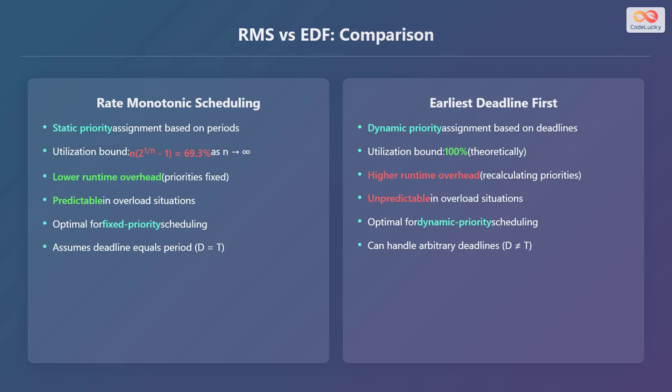Let's compare Rate Monotonic Scheduling, or RMS, with Earliest Deadline First, or EDF. RMS uses static priority assignment based on periods, with a utilization bound of approximately 69.3% as N approaches infinity. It has lower runtime overhead because priorities are fixed, and is predictable in overload situations. RMS is optimal for fixed priority scheduling and assumes the deadline equals the period, D equals T.